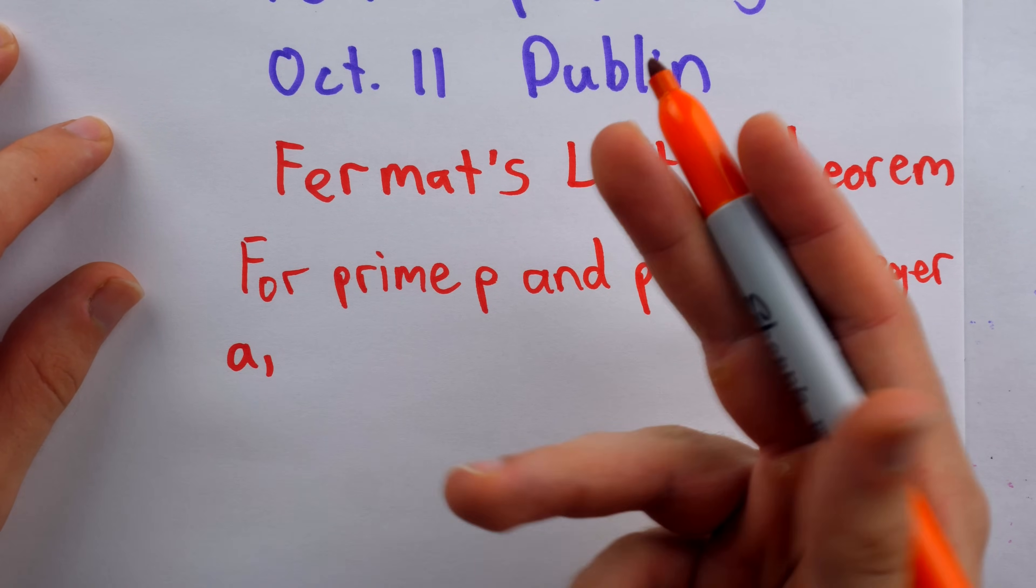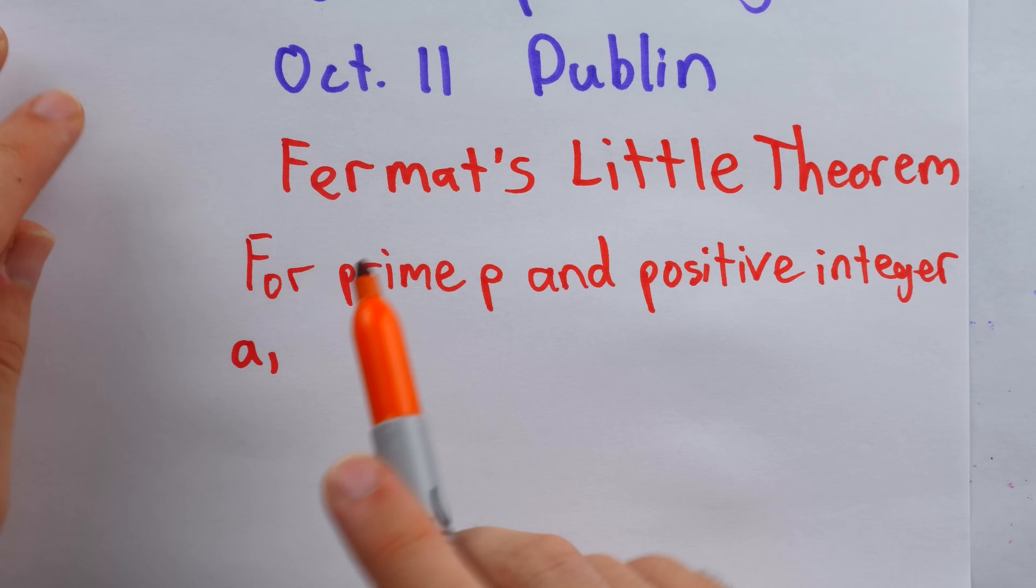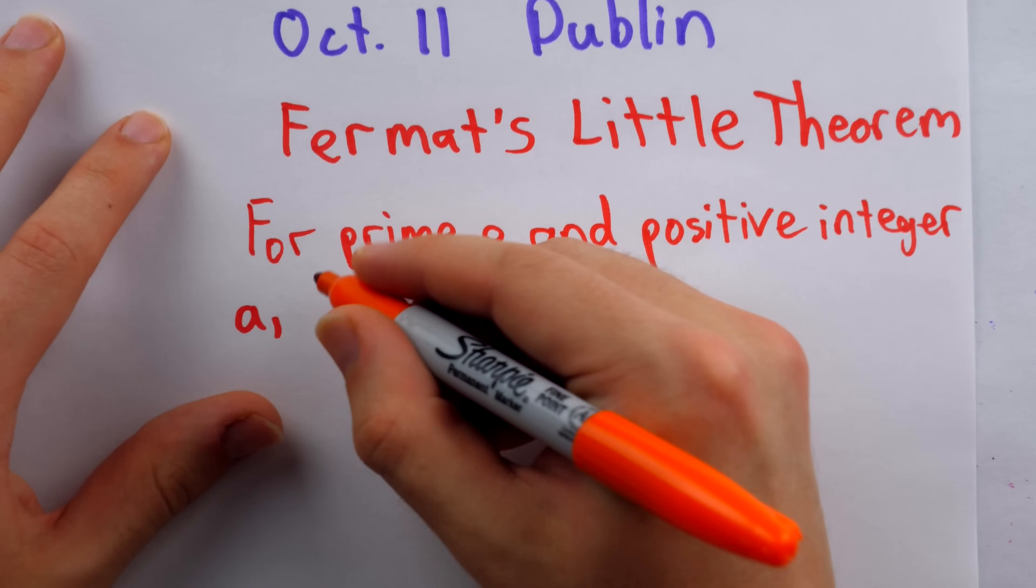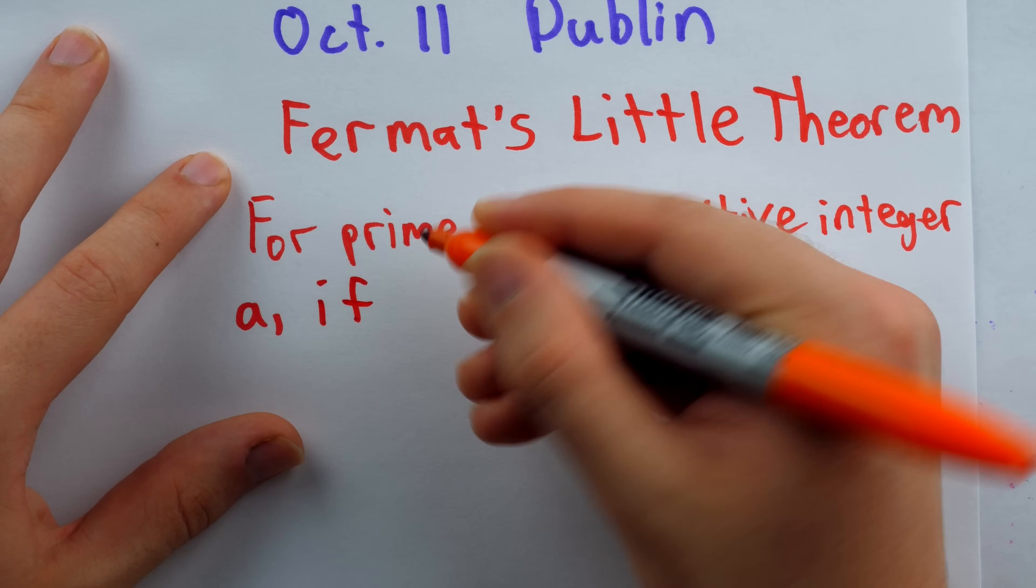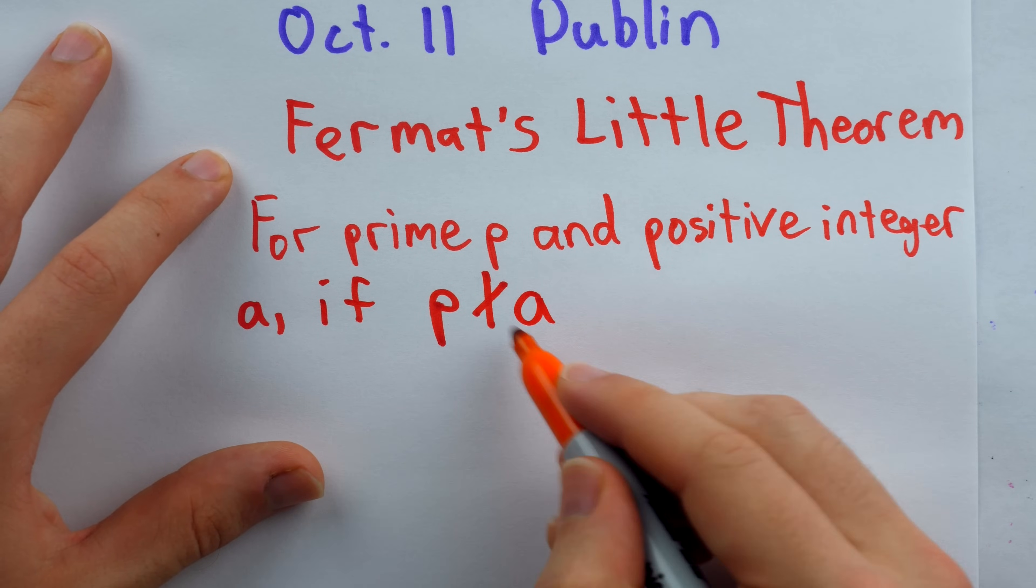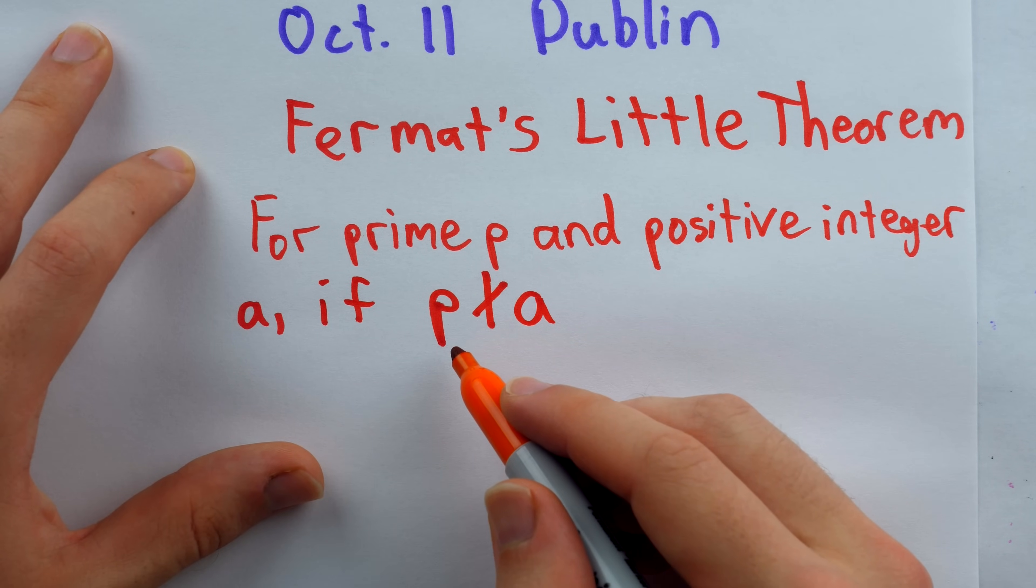Fermat's Little Theorem can be stated in various ways, but one thing it tells us is that for a prime number p and a positive integer a, if p does not divide a, which we can write like this, so a is not divisible by that prime number p.